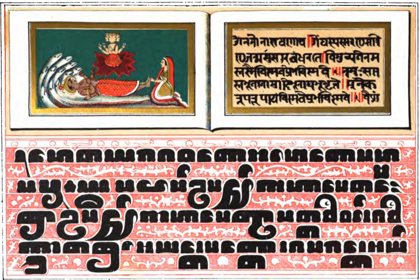The Velthuis scheme was originally developed in 1991 by Franz Velthuis for use with his Devnag Devanagari font, designed for the TeX typesetting system. This system of representing Pali diacritical marks has been used in some websites and discussion lists. However, as the web itself and email software slowly evolve towards the Unicode encoding standard, this system has become almost unnecessary and obsolete. The following table compares various conventional renderings and shortcut key assignments.